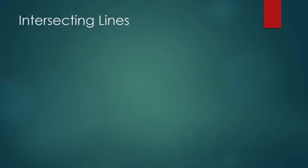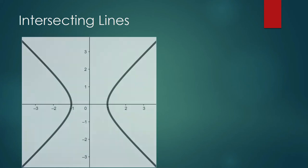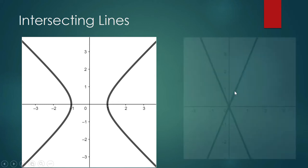Two intersecting lines would be the degenerate case of a hyperbola. This is our regular hyperbola. What if the vertices of our hyperbola coincide with each other?